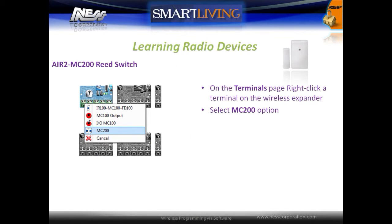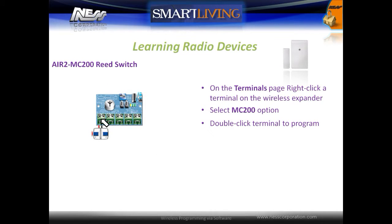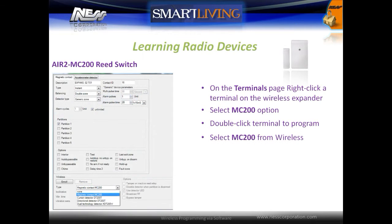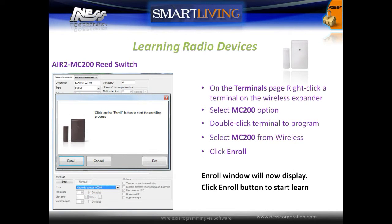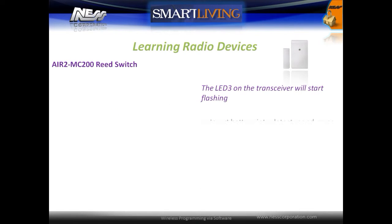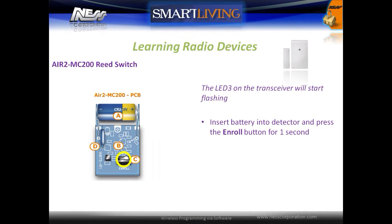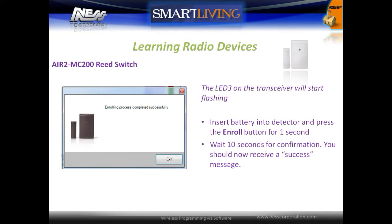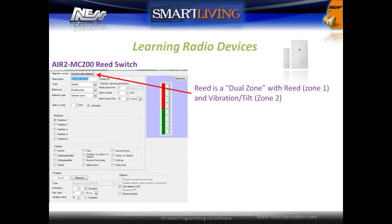To program this device, on a wireless terminal right click and select the MC200 option. Double click on the terminal to open the configuration window. Under the wireless configurations, select the MC200 option and then select the enroll button. The transceiver's LED 3 will start to flash — insert the battery into the device and press the enroll button for one second. You should receive a learn confirmation after about 10 seconds. The MC200 is a dual zoned device with the reed switch on zone 1 and the vibration and tilt sensor on zone 2.